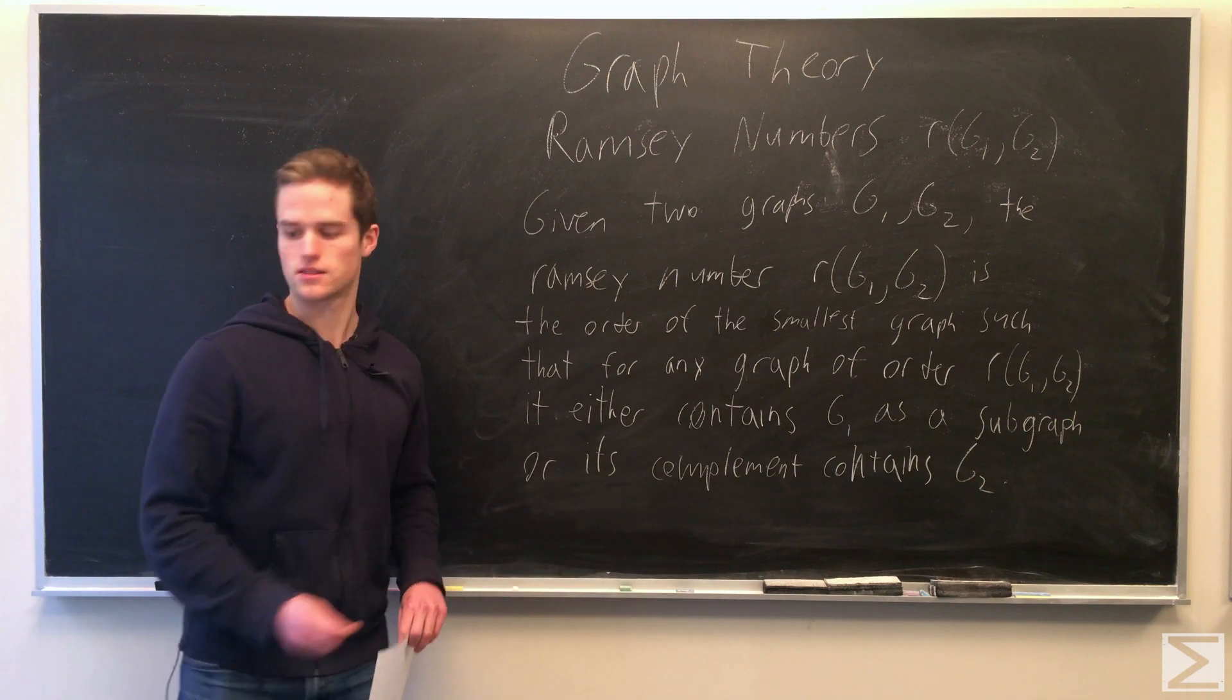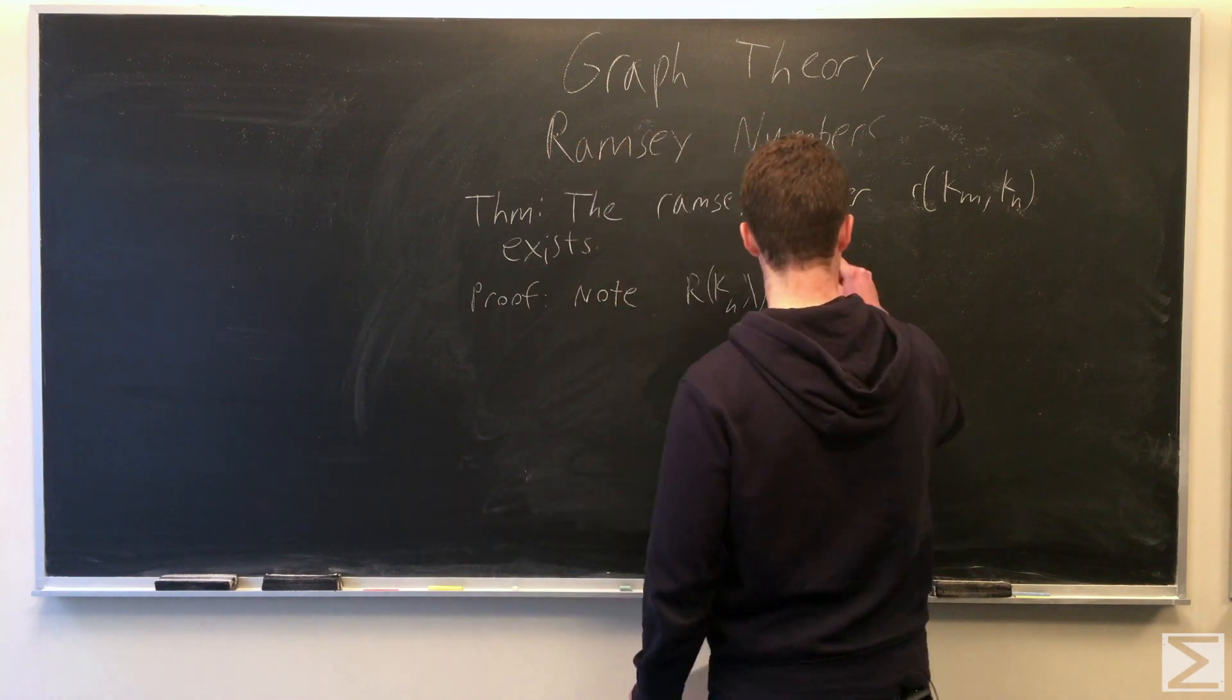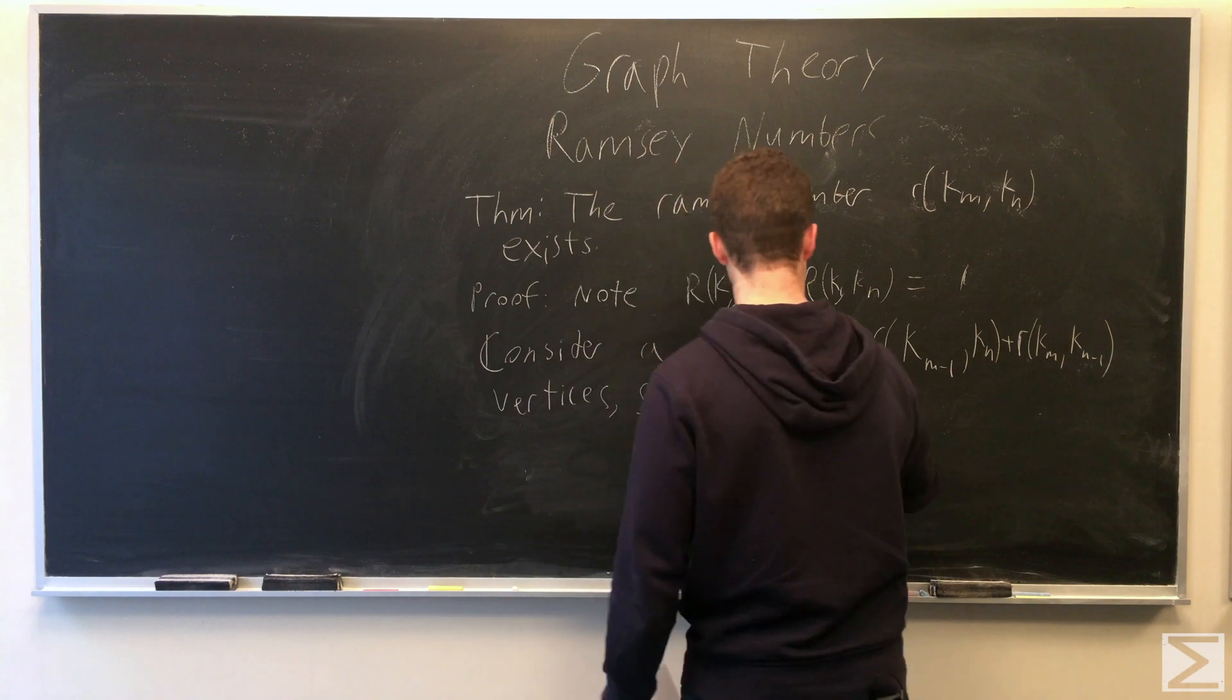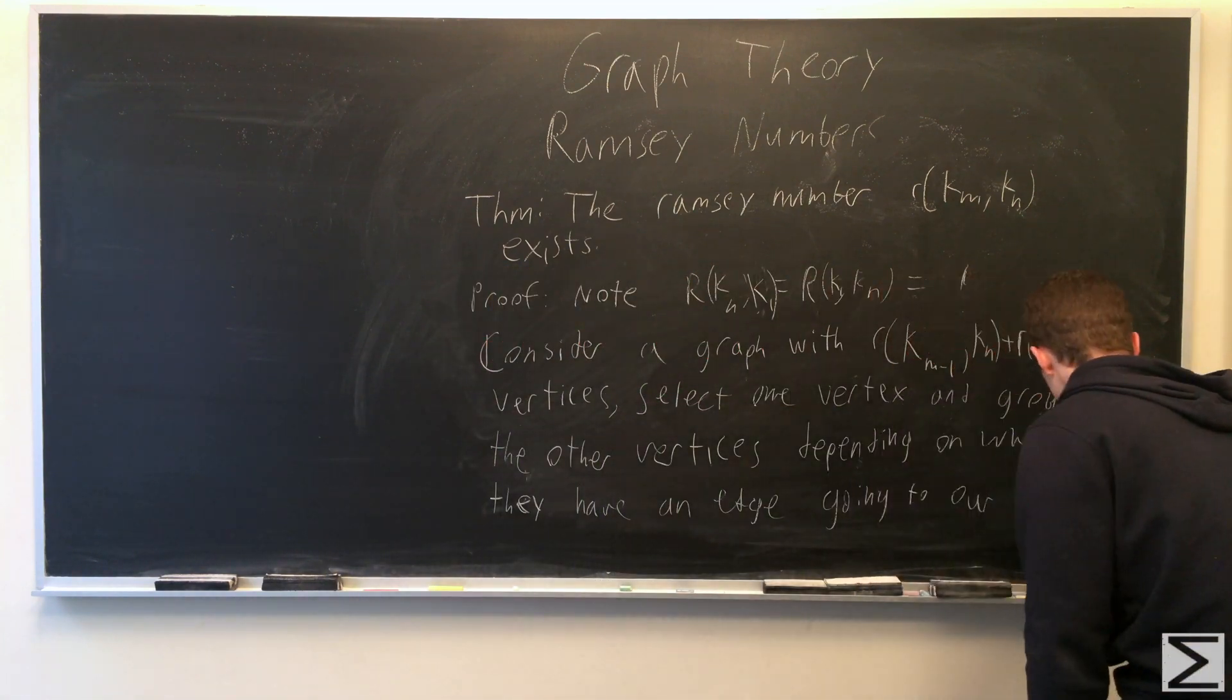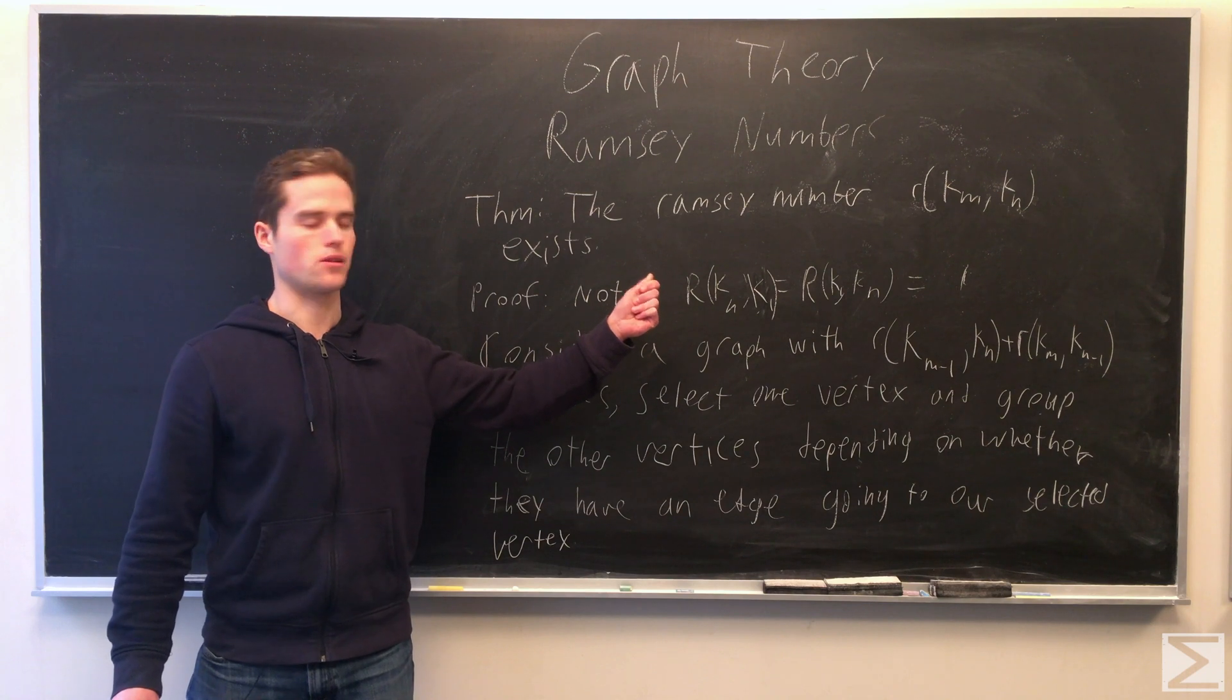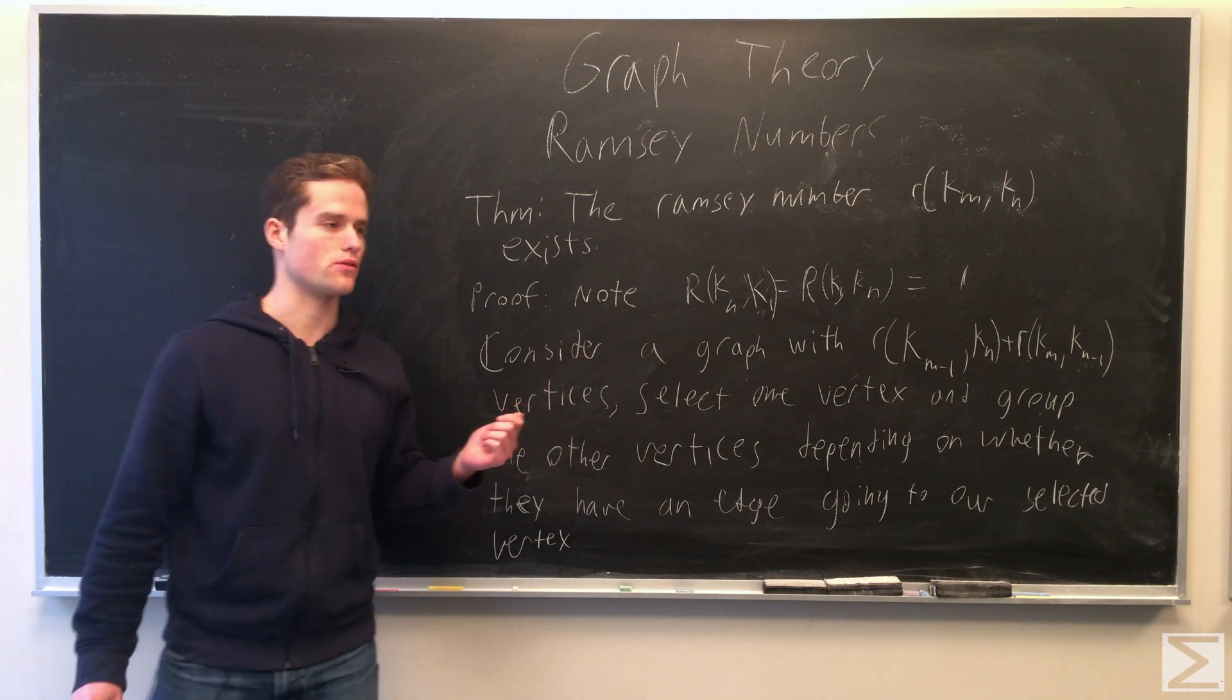So we can prove that this number in fact exists. We can prove the Ramsey number R for the complete graph with n vertices does in fact exist. First we're going to note that R(k_n, k_1) equals R(k_1, k_n) equals 1 because k_1 is such a small graph, it shows up a lot.